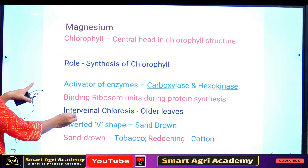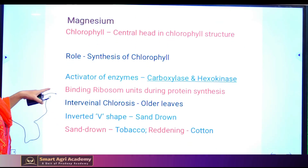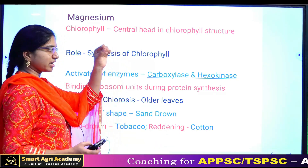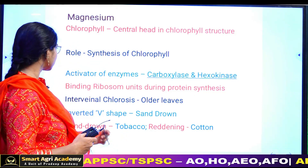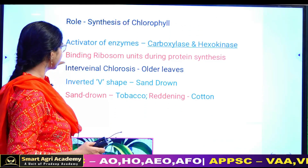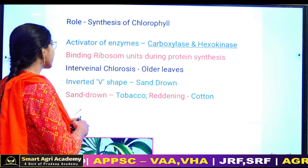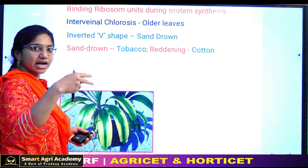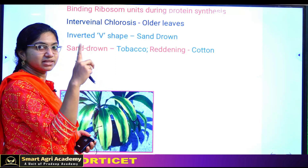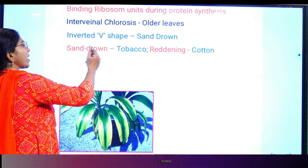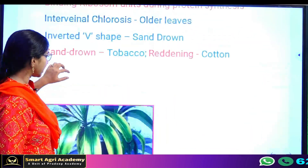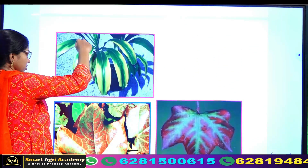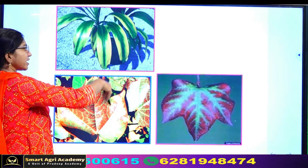Next is magnesium. Magnesium is the central element of chlorophyll — it is the green pigment of chlorophyll structure. The main mineral is magnesium, involved in synthesis of chlorophyll and enzyme activation. Magnesium deficiency causes interveinal chlorosis in old leaves in an inverted V-shape pattern. In tobacco and cotton, this appears as reddening.